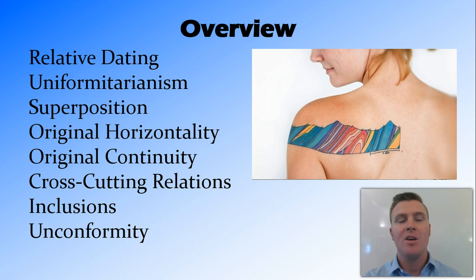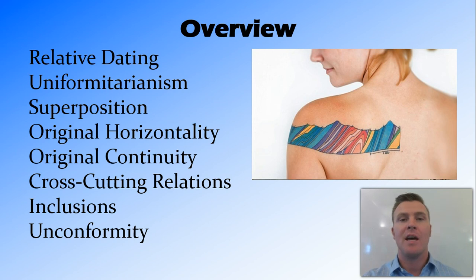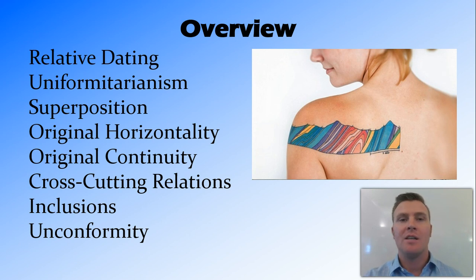In this video we've looked at relative dating and covered the laws of uniformitarianism, superposition, original horizontality, original continuity, cross-cutting relations, inclusions, and unconformity. Putting all of these rules together, we can look at a segment of the earth, examine the different strata and the shapes they make, and put together a geological time frame to work out which event occurred when and place them all in order. Thanks for watching.